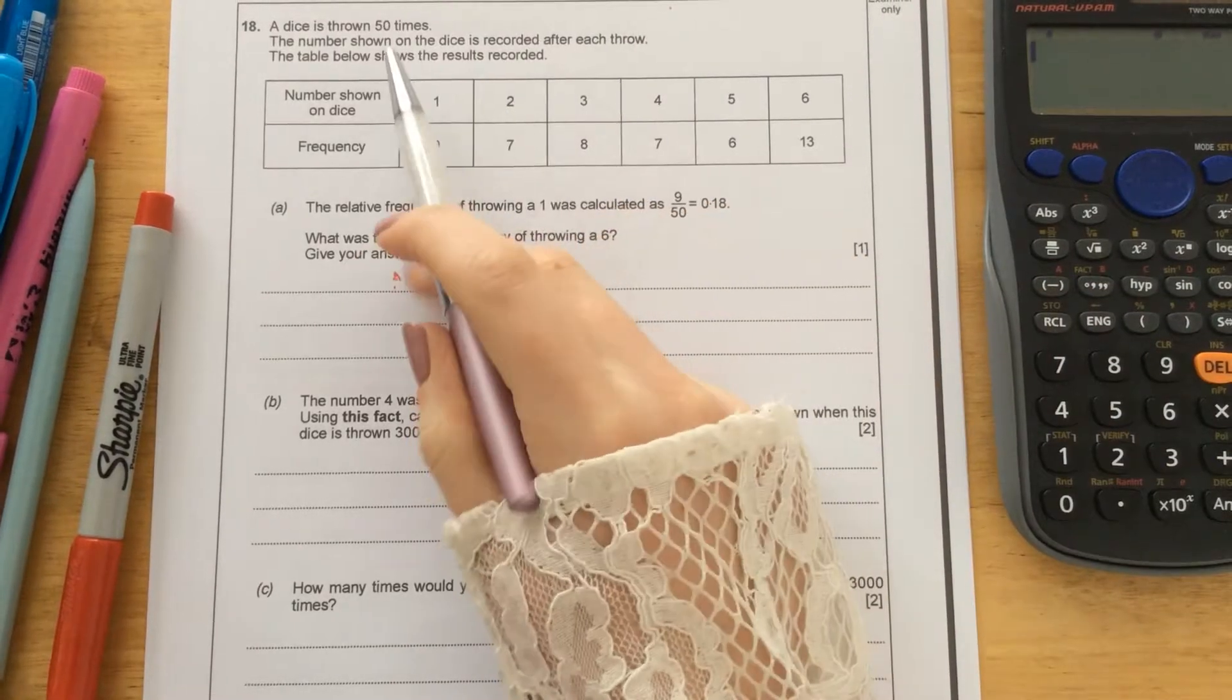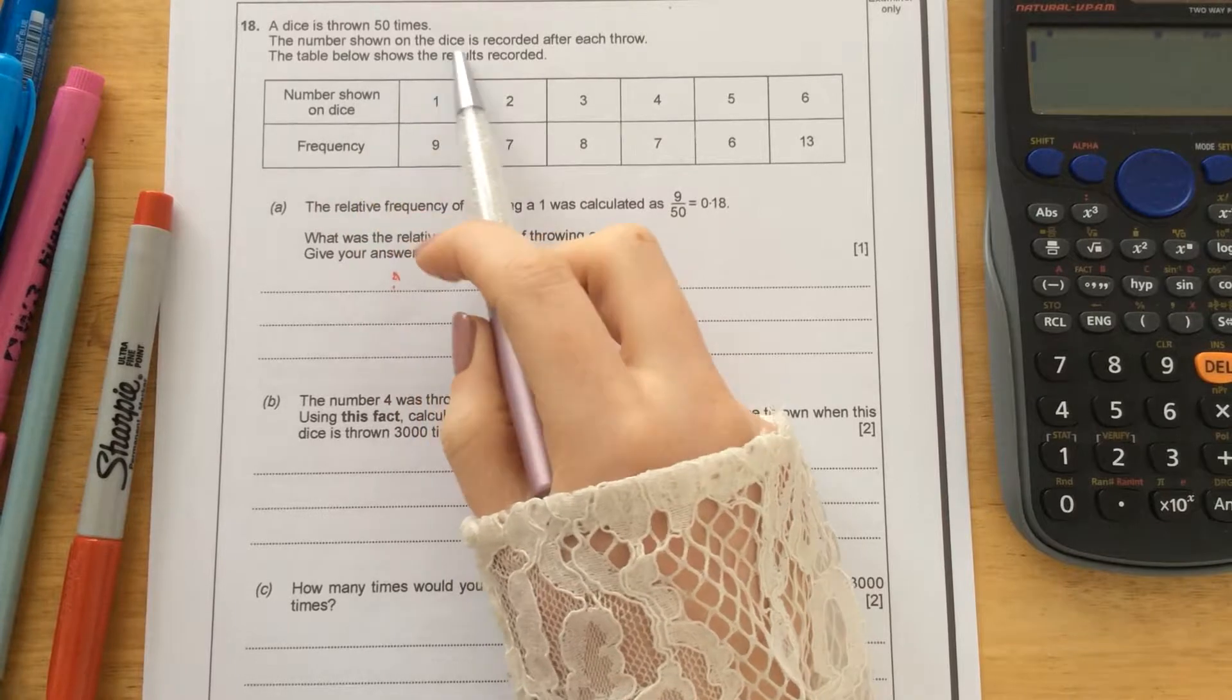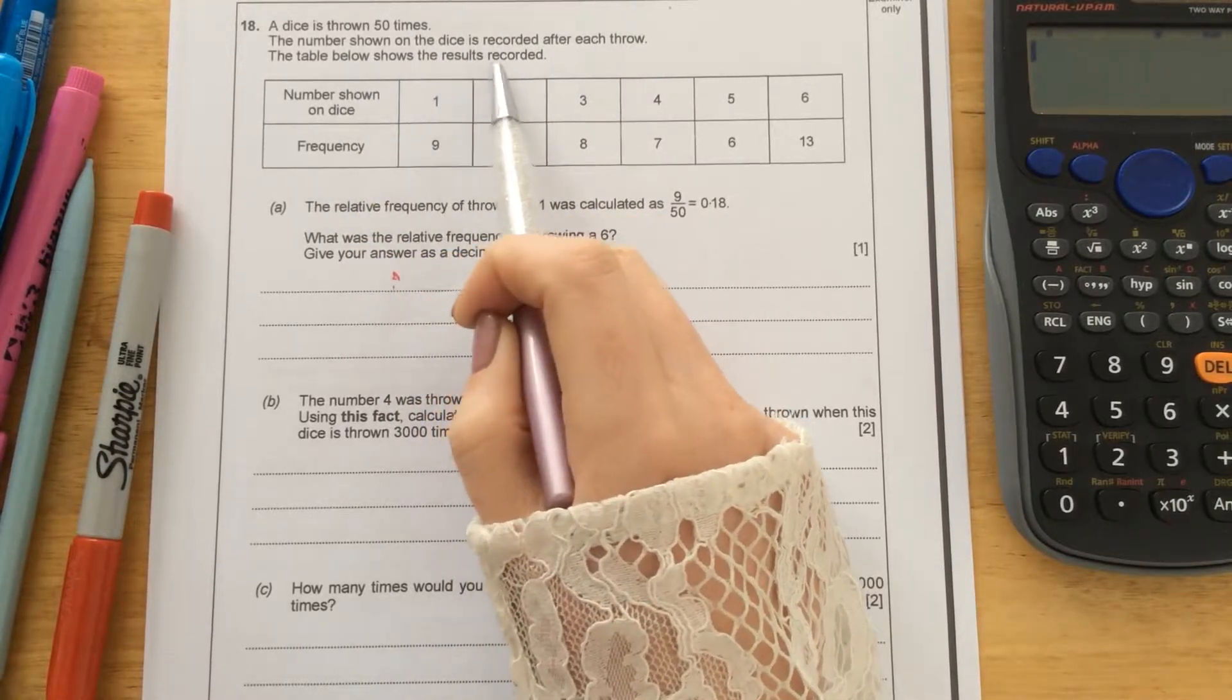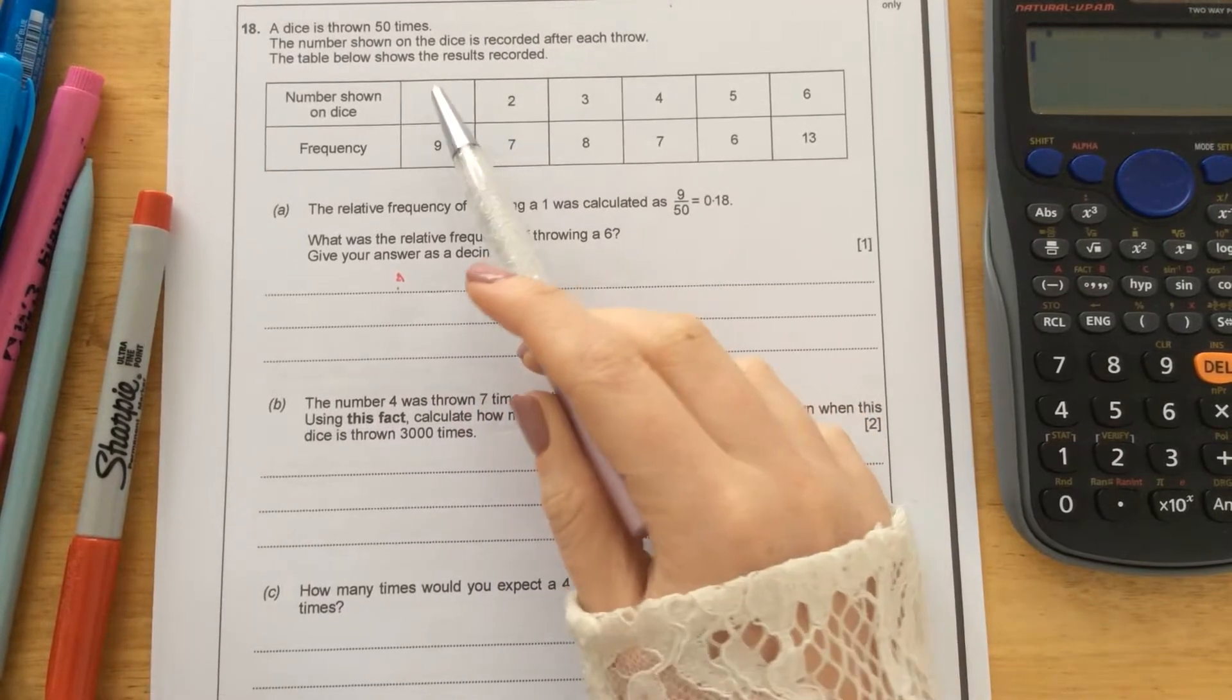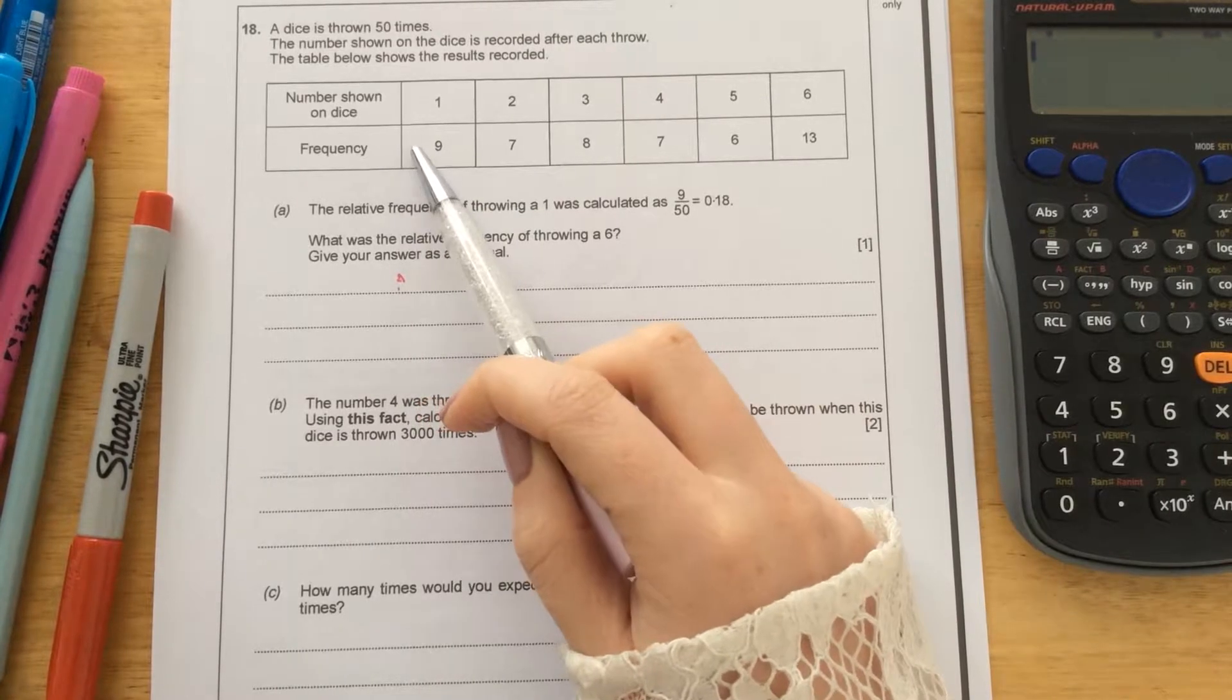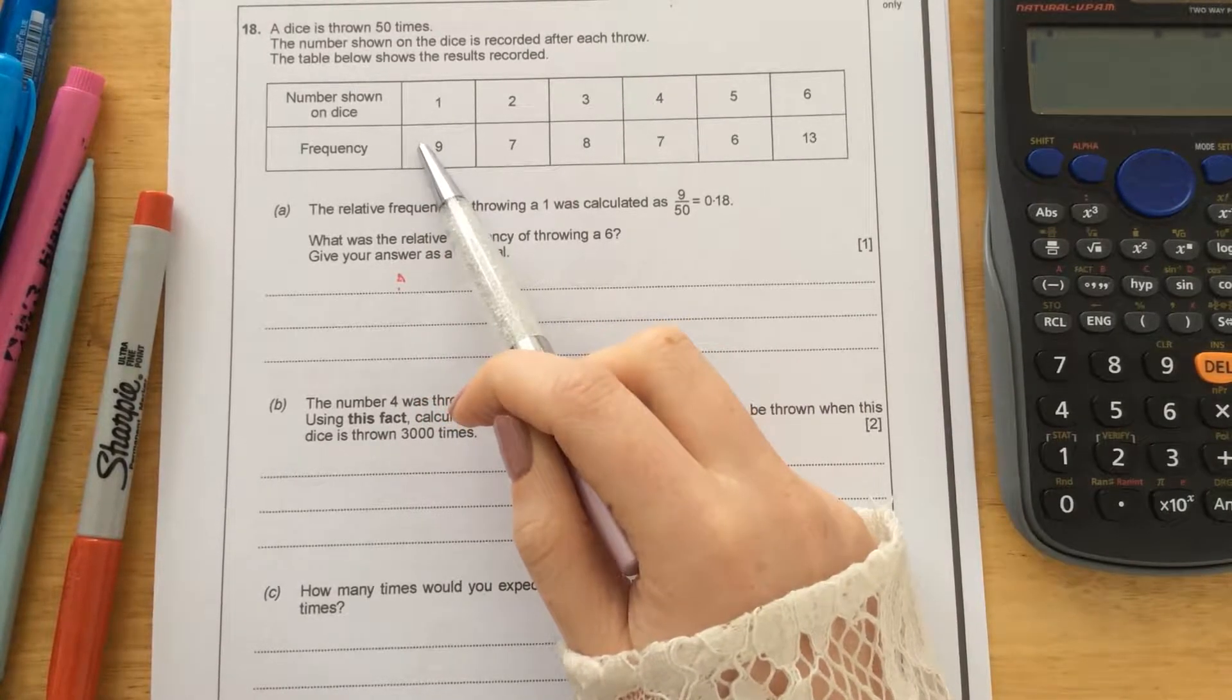Question 18. A dice is thrown 50 times. The number shown on the dice is recorded after each throw. The table below shows the results recorded. So the number on the dice shown is at the top, ranging 1 to 6, and the frequency is how many times that number was rolled.